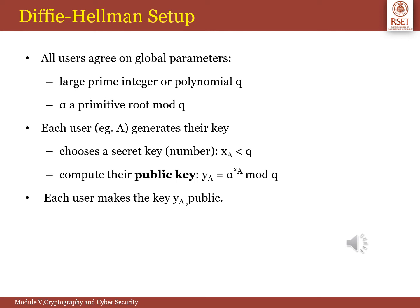In the Diffie-Hellman Key Exchange algorithm, there are two publicly known numbers: a prime number Q and an integer alpha that is the primitive root of Q. Suppose users A and B wish to create a shared key. User A selects a random integer xA which is less than Q and computes yA which is equal to alpha raised to xA mod Q. Similarly, B independently selects a random integer xB which is less than Q and computes yB which is equal to alpha raised to xB mod Q. Each side keeps the X value private and makes the Y value public.